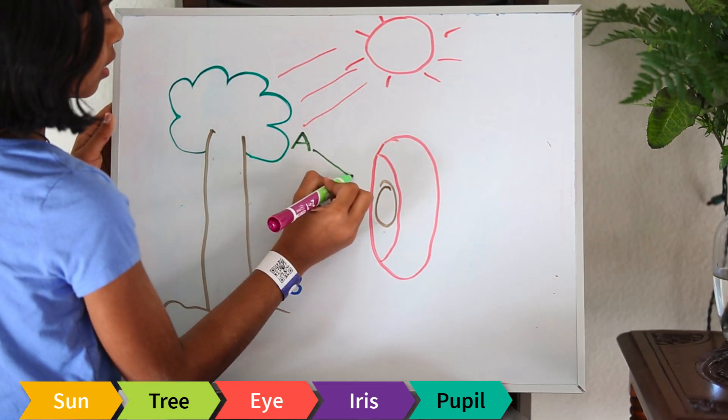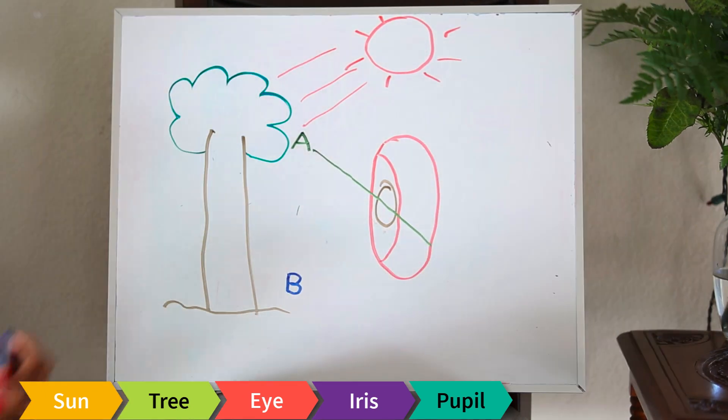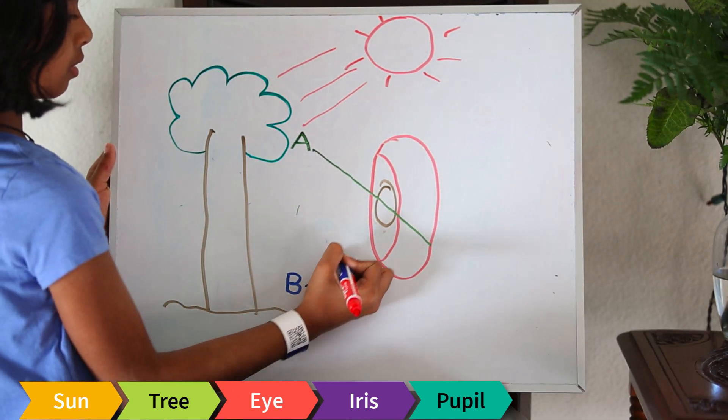The light bounces off point A and goes into our eyes and at the back of the eye. The same with point B.